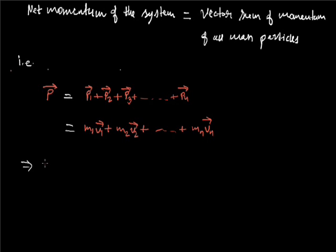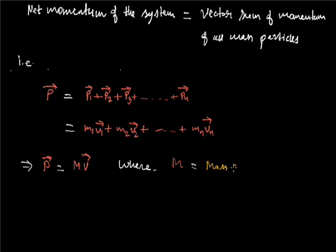The total momentum of the system equals mv, that is the product of the total mass of the system and the velocity of the center of mass, where the complete mass is considered to be concentrated. Here m equals the mass of the system and v equals the velocity of the center of mass of the system.